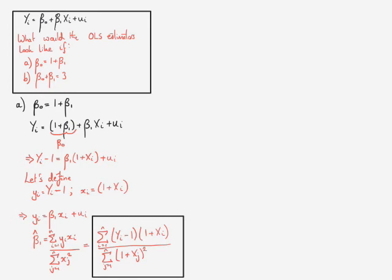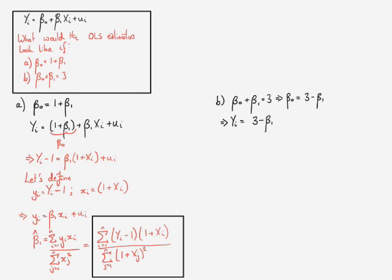Moving on to the second part, where we're trying to impose that β₀ + β₁ = 3, we're going to use exactly the same trick. If β₀ + β₁ = 3, we can write β₀ = 3 minus β₁. Substituting this into the relationship, we estimate yᵢ = (3 − β₁) + β₁xᵢ + uᵢ. Grouping terms and taking 3 to the left-hand side gives us yᵢ minus 3 = β₁(xᵢ − 1) + uᵢ.